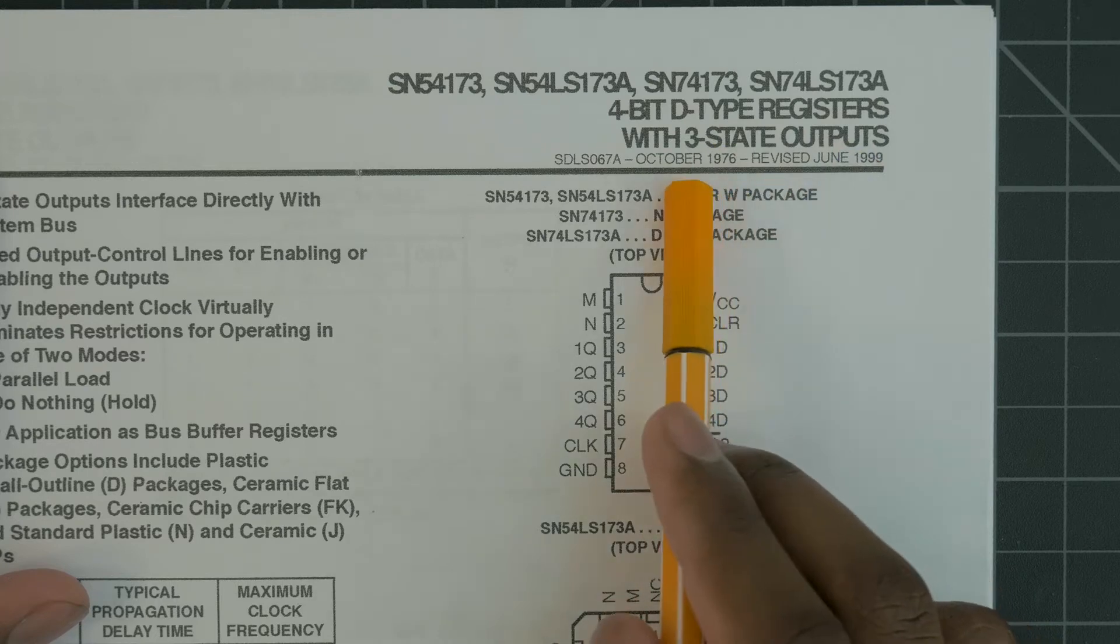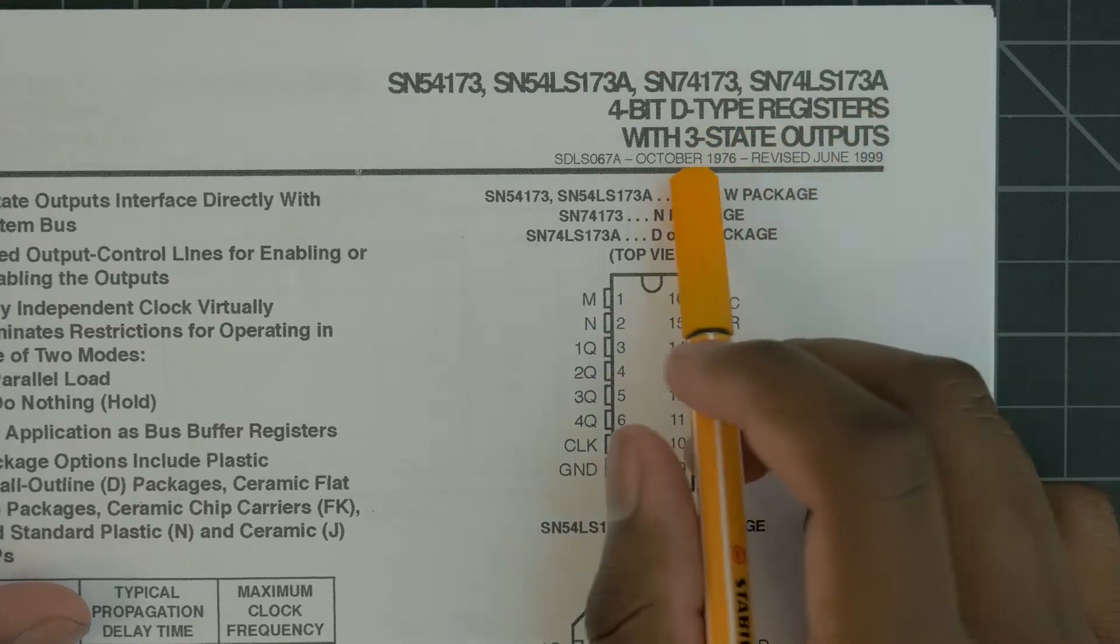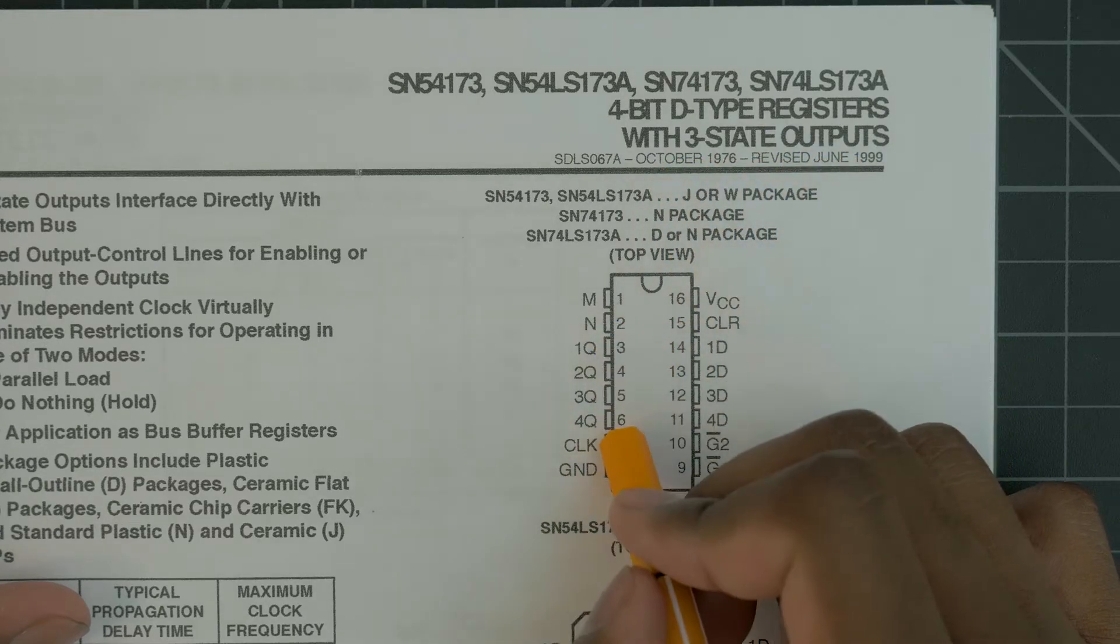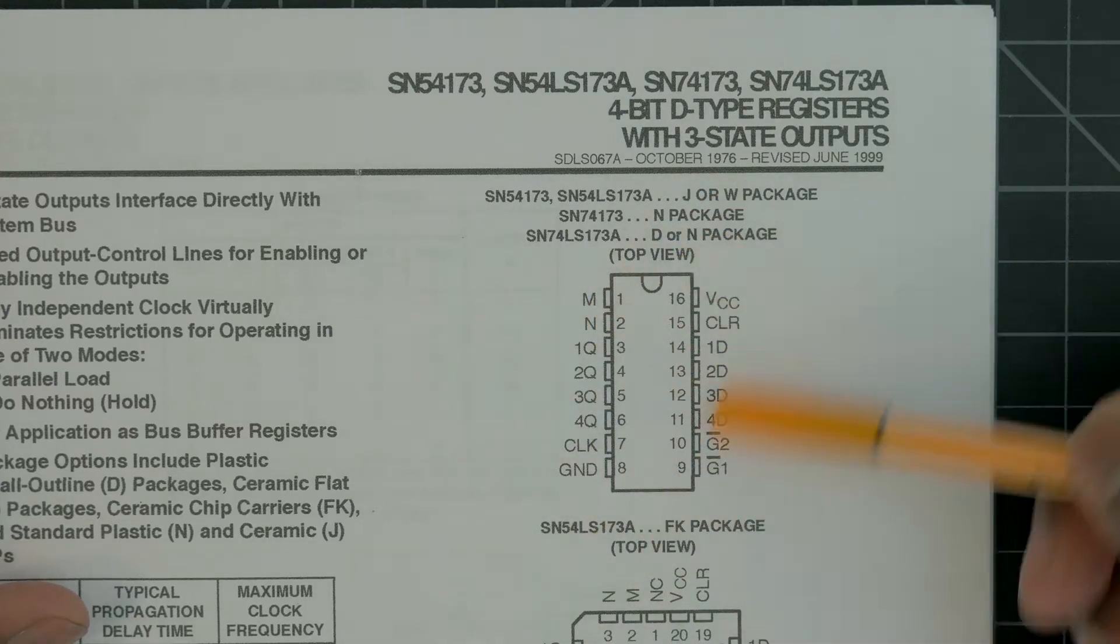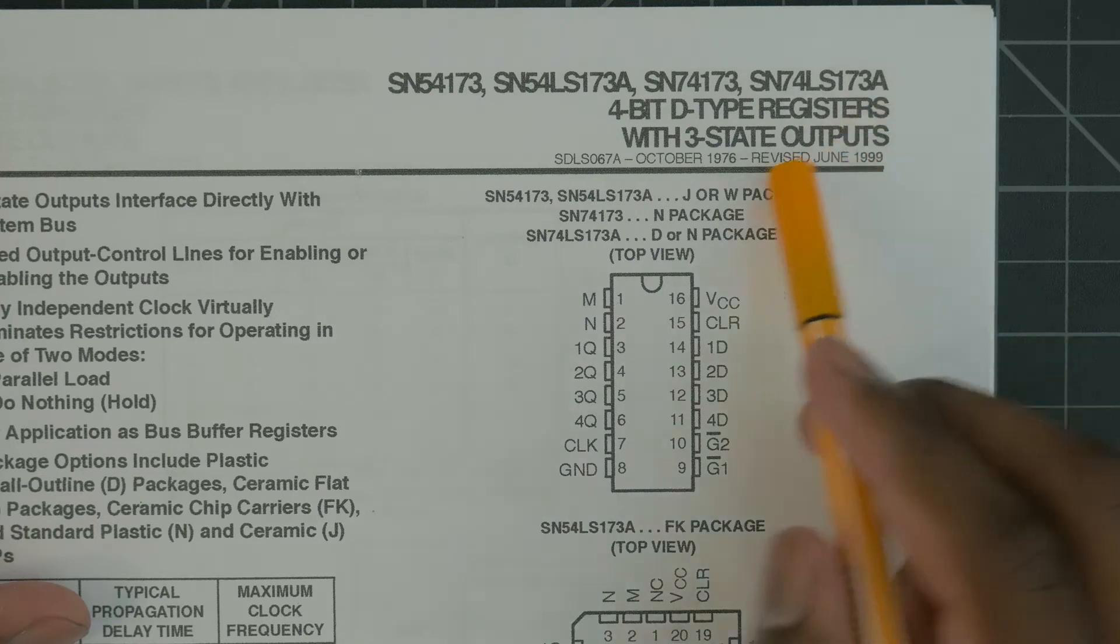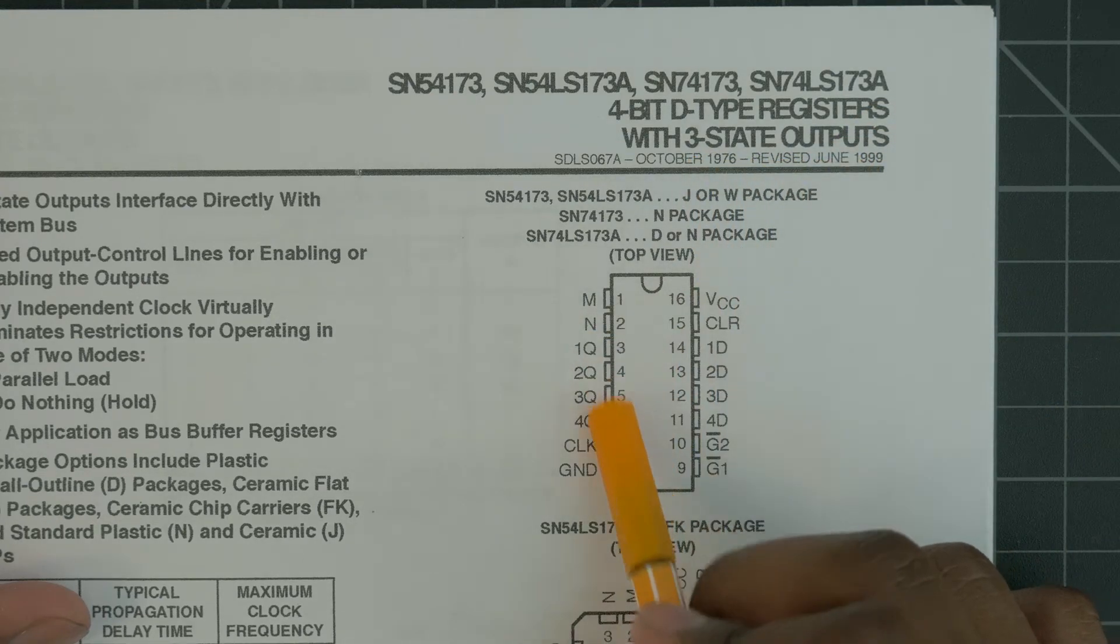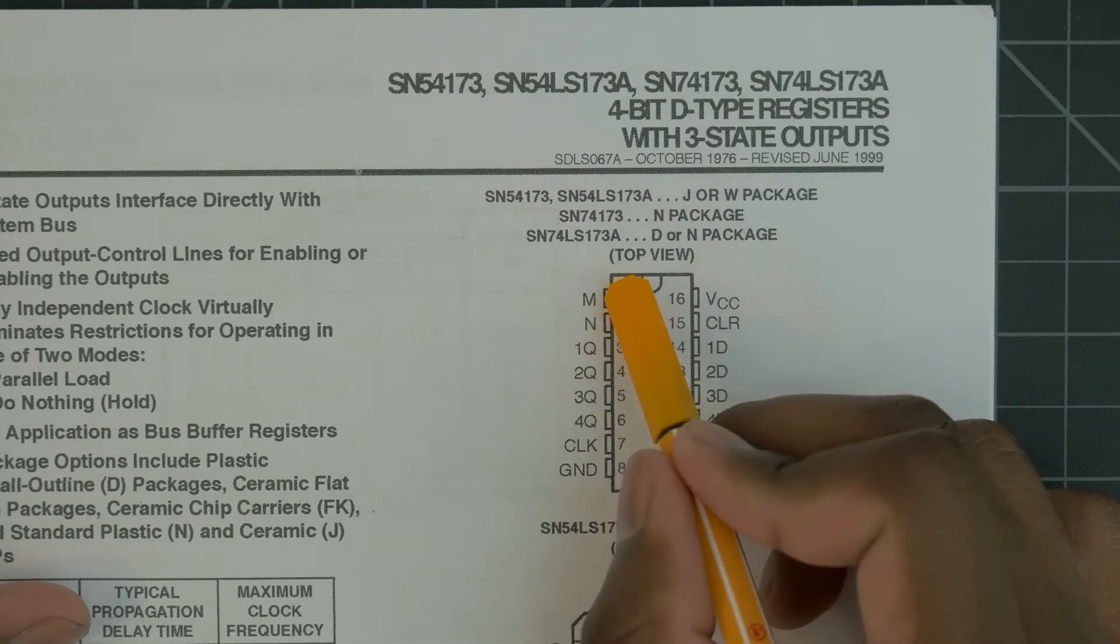And so that means that we already have a tri-state buffer on each one of these outputs Q. Now I'm not going to use that because if I have the tri-state buffer acting as a buffer, then I won't be able to see what's on the Q outputs at all times. And I always want to be able to see what's inside this register at all times to help with debugging and things like that. So I'm actually going to tie down the three-state output so that the Q is constantly showing the value inside this register. And the way you do that is with M and N.